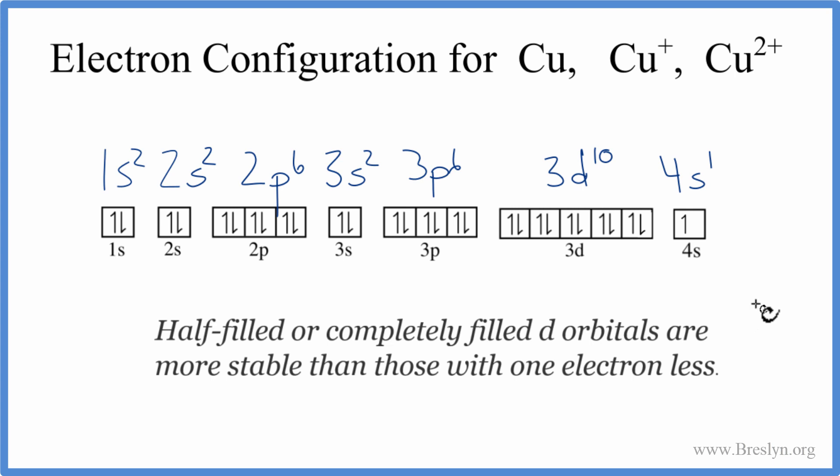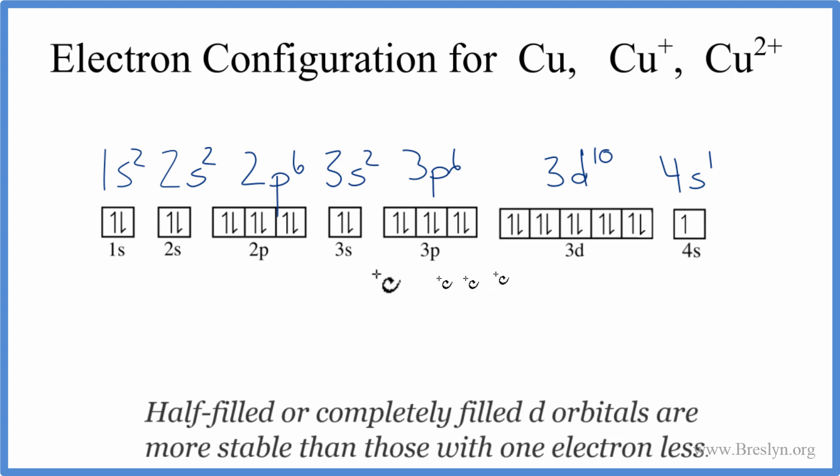We can also write a condensed notation for this, and that looks like this. Argon in brackets, and then we have 3d10, 4s1.